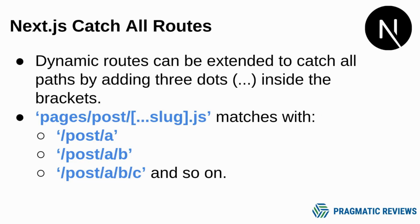When using Next.js catch-all routes feature, the dynamic routes can be extended to catch-all paths or routes by adding three dots inside the brackets. If we create this file within the folder pages/post/ and then square brackets, three dots, and the filename.js, the route defined here is going to match with /post/a, /post/a/b, and so on.